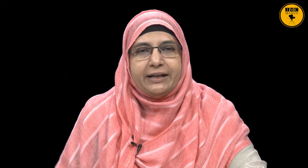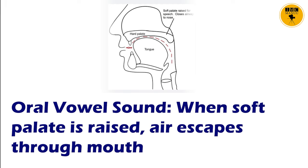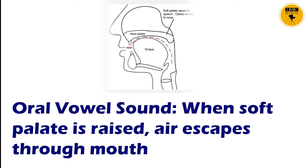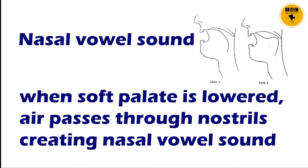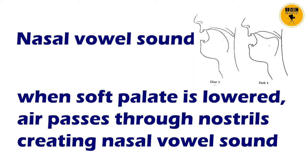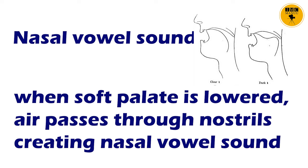The soft palate refers to the part of the mouth — the roof of the mouth — that is way back towards the end. There are two positions of the soft palate. When the soft palate is raised, air escapes from the mouth and an oral vowel sound is produced. On the other hand, when the soft palate is lowered, air cannot pass through the mouth; it passes through the nostrils, creating a nasal vowel sound.